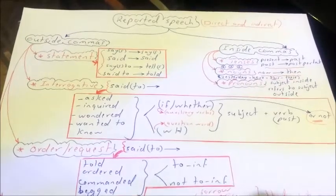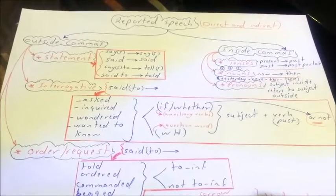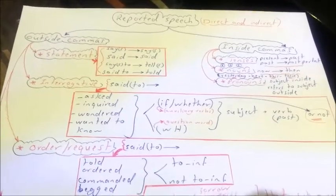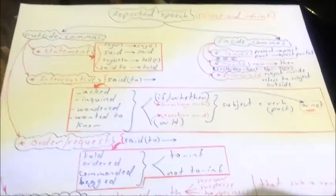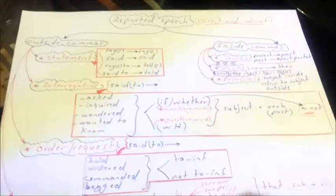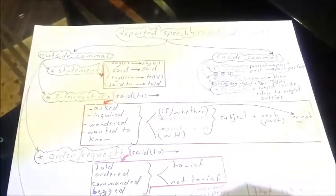Assalamualaikum, hello everybody. Our video today is about a famous topic in English grammar: reported speech, or what we call direct and indirect. In order to change a sentence from direct to indirect, we have to care about two changes: outside commas, depending on the kind of sentence, and inside commas.